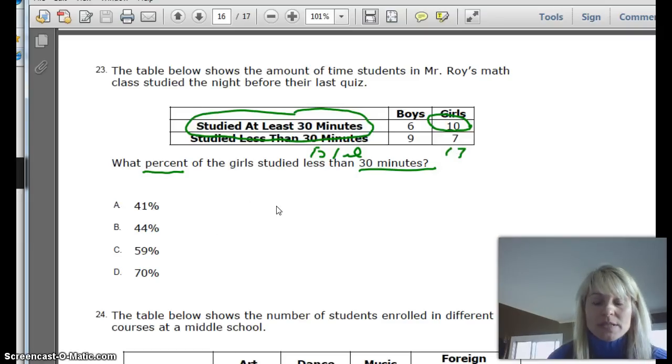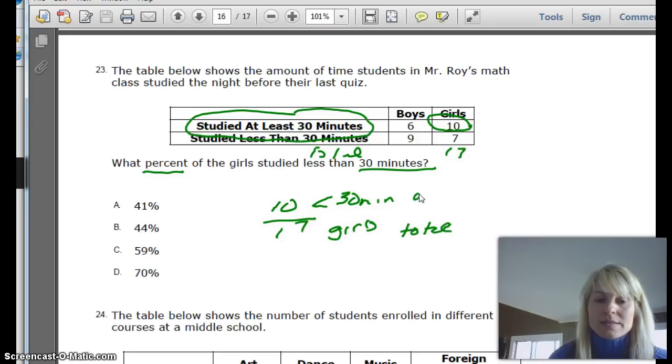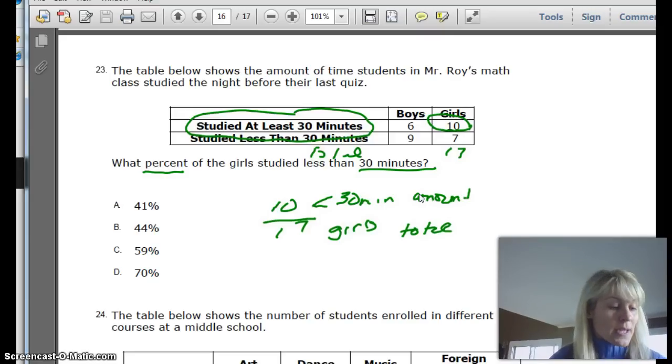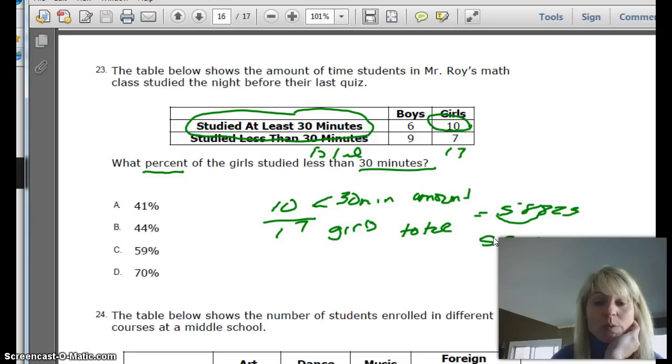So when we're doing our percents, we have 10 girls that study less than 30 minutes out of a total of 17 girls. So again, this is the total we're talking about and this is the amount that we're talking about. So again, nice ratio, we're just going to do 10 divided by 17 and that is going to give us 50.588823 blah blah blah. So again, times by 100, two zeros, make it move over once. So it would give me 58.8% of the girls studied less than 30 minutes.